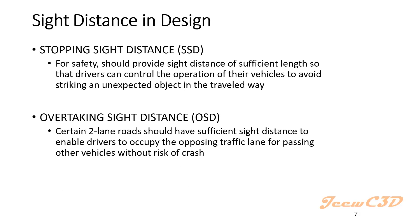There are four types of sight distance we encounter in design. The first is stopping sight distance. As the name implies, when you are driving and come across an obstacle, you apply brakes, the vehicle decelerates, and stops just before hitting the object. The total distance traveled during this process is called stopping sight distance.